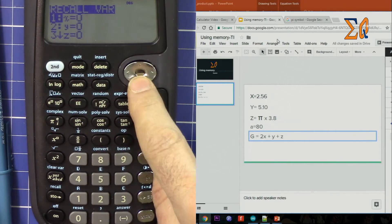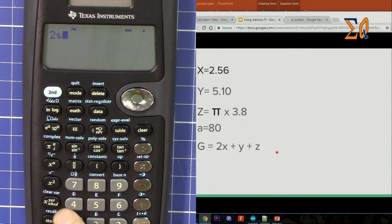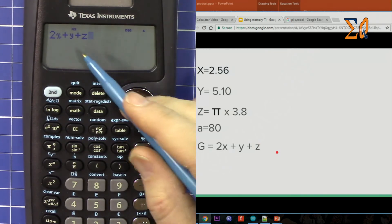Now if I go second function and recall, you will see that X, Y, Z, and all of them will have zero. Press this X plus Y plus Z.